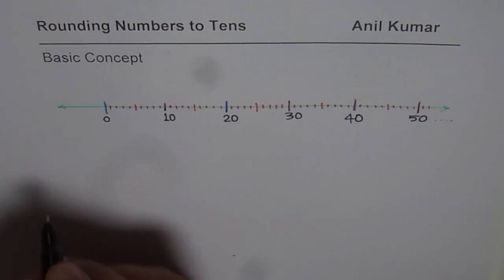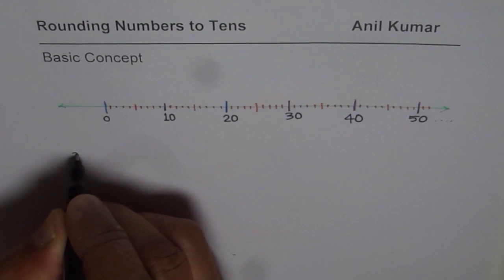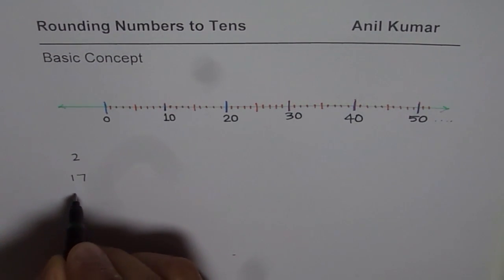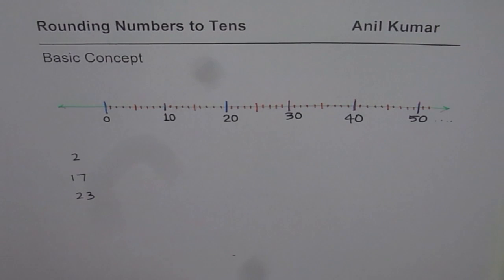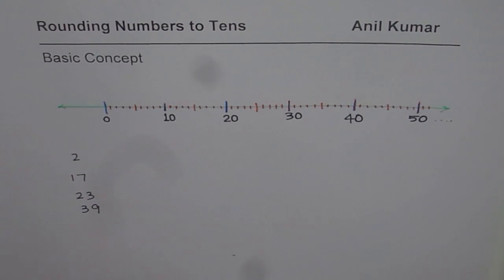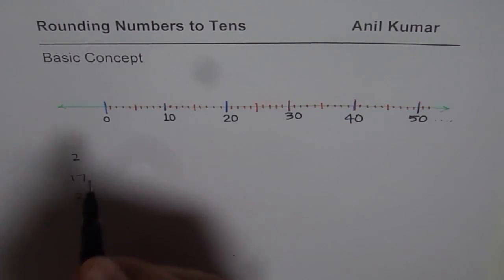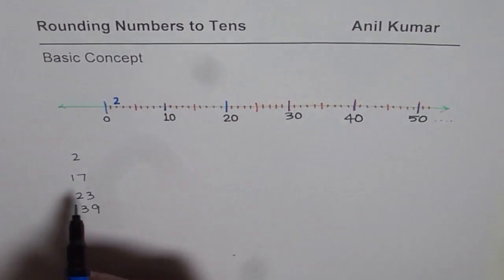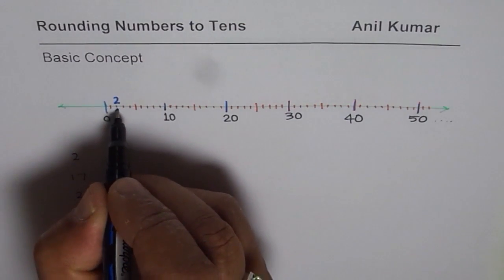Let me take a few numbers now. Let us take number 2 and then we will take number 17, number 23 and let us say a number 39. These numbers we are going to place on the number line. Number 2, here we have 0, that is 2 for us. So this is number 2 for us.